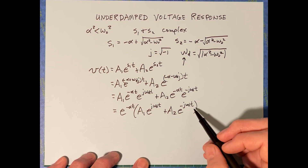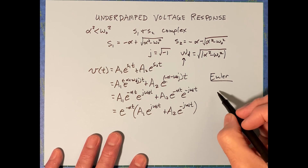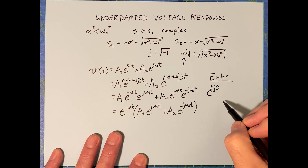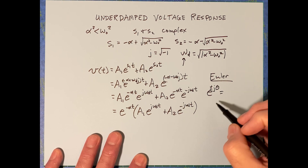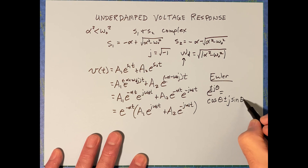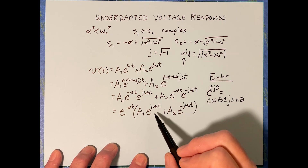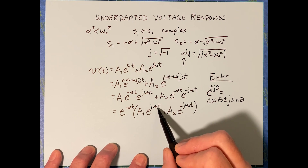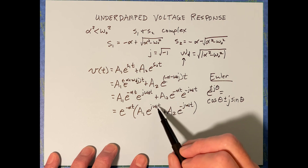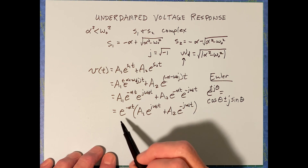Now we're going to introduce an identity — technically a trig identity — called the Euler identity. It states: e^(±jθ) equals cosine of that angle plus or minus j times the sine of that angle. We're going to use this since it's a J angle, treating omega_D·t in each case as the angle theta — plus omega_D·t or minus omega_D·t.